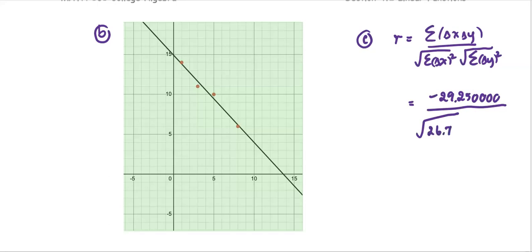divided by the square root of summation of delta x squared, which is 26.75, times the square root of summation of delta y squared, which is 32.75. And then r is negative 0.988.